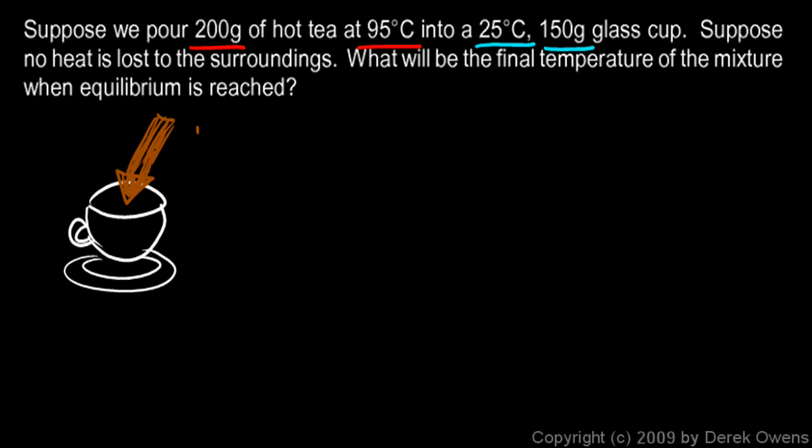Okay, the mass of the tea is 200 grams, and the temperature of the tea is 95 degrees Celsius. And then the cup down here, the mass of the cup is 150 grams, and the temperature of the cup is 25 degrees Celsius. That's our given information.